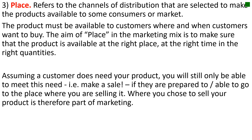The third component is place. This refers to the channels of distribution that are selected to make the products available to consumers or the market. The product must be available to customers where and when customers want to buy. The aim of place in the marketing mix is to make sure that the product is available at the right place, at the right time, and in the right quantities.